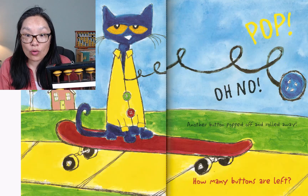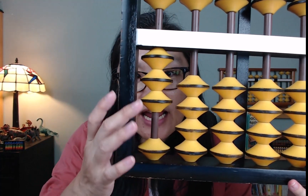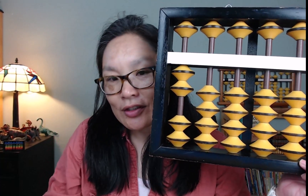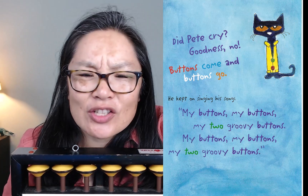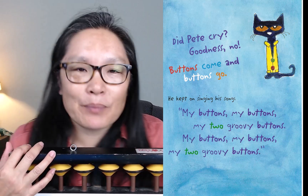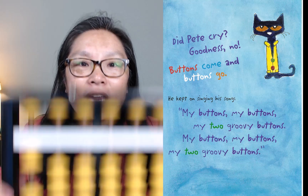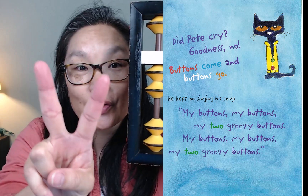Pop! Oh no! Another button popped off and rolled away. We had three and then one popped off — how many buttons are left? Two. Two buttons are left. We used to have three and then one popped off, so now we have two left. Did Pete cry? Goodness no! Buttons come and buttons go. He kept singing his song — my buttons, my buttons, my two groovy buttons.